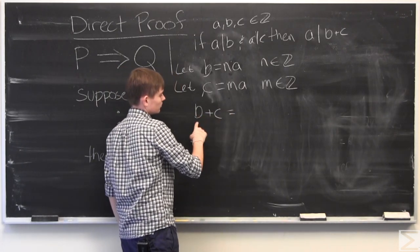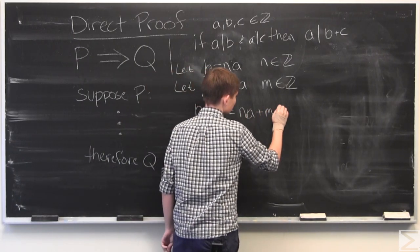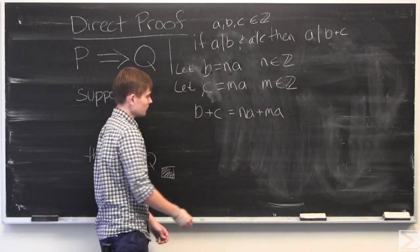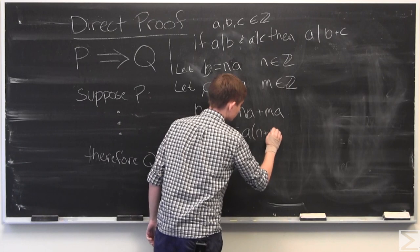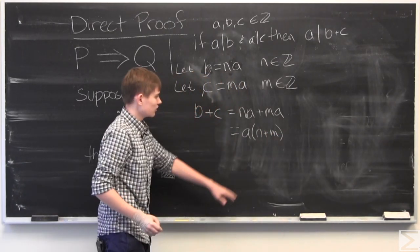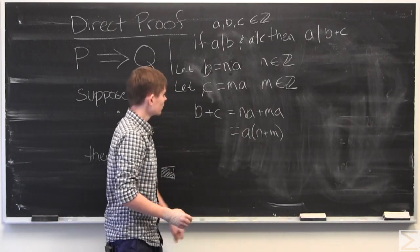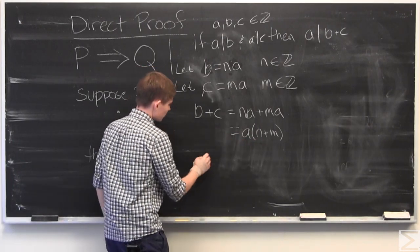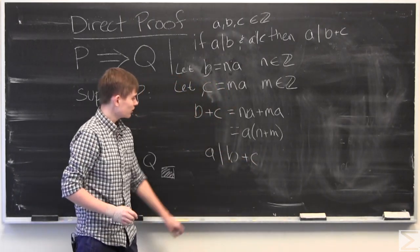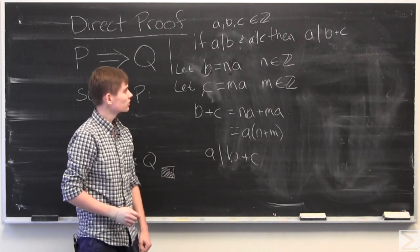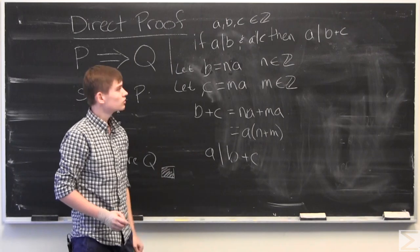Now B plus C is N A plus M A. And since the addition of two integers is also an integer, this means that B plus C is a multiple of A, and therefore A divides B plus C. And we started with P, and we arrived at Q.